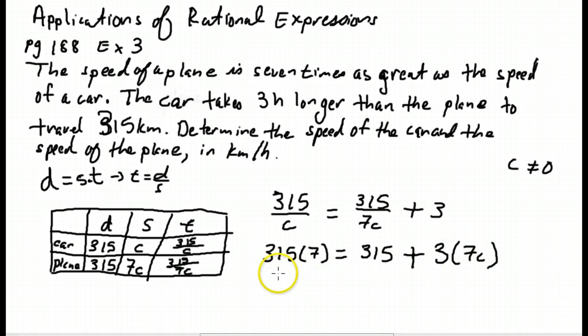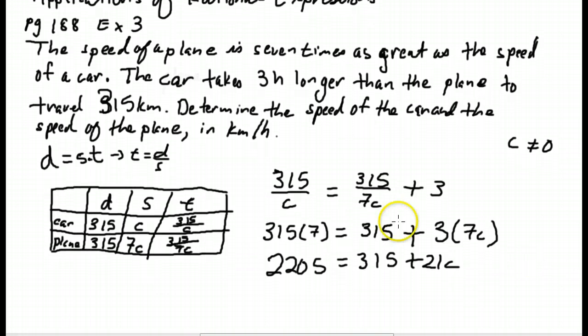In order to solve this rational expression, we are going to take 315 times 7. That's 2205 is equal to 315 plus 21C. 21C, I like my variable on the left side. 2205 minus 315 is 1890. It doesn't matter which side. Since it's an equal sign, I could write 1890 equals 21C or 21C is 1890. So C is 1890 divided by 21, which is 90.